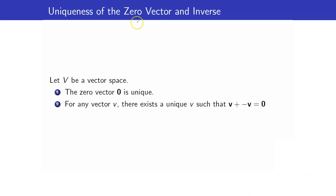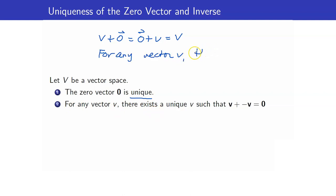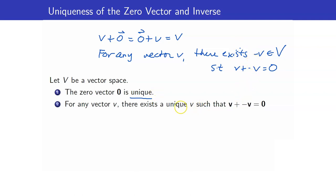This cancellation law will be very useful to prove some important properties, as we will see later on. We will use it to show the uniqueness of the 0 vector and the additive inverse. When I gave the definition of vector space, I said there is an element 0 such that v plus 0 equals 0 plus v equals v, but I did not mention anything about its uniqueness. It turns out that the 0 vector is unique. Similarly, for the additive inverse, I said there exists a negative v such that v plus negative v equals 0, without mentioning uniqueness — but the theorem tells us the additive inverse must also be unique.